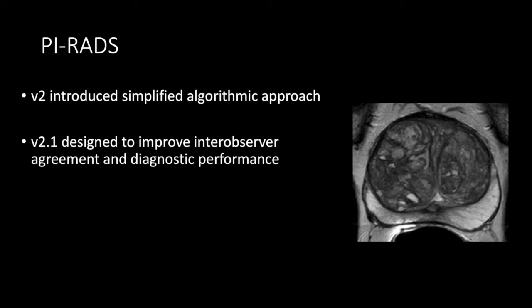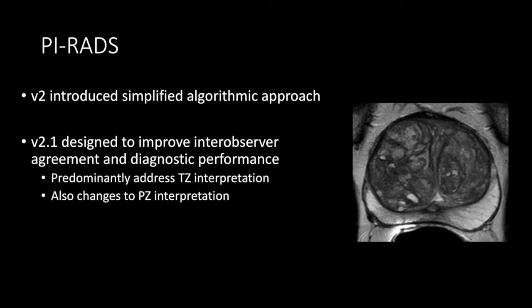In 2019, PI-RADS version 2.1 was released that kept this same basic framework and made further modifications. These modifications were principally designed to improve inter-observer agreement and hopefully also improve diagnostic accuracy. Since inter-observer agreement and diagnostic accuracy had previously been lower in the TZ compared to the PZ, most of the changes were to descriptors in the TZ, though there were also some key changes in the PZ as well.